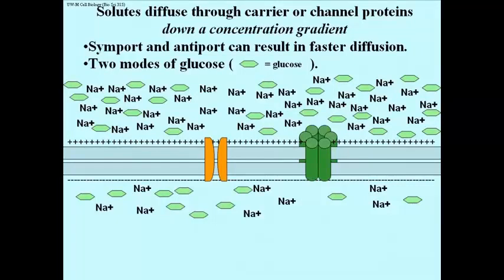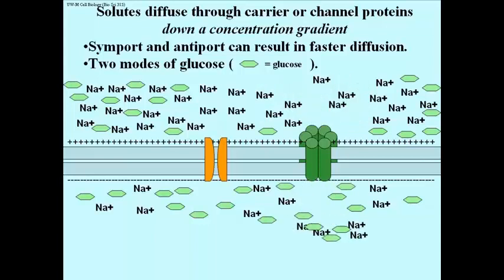Here is glucose transport enhanced by an electrochemical gradient. Notice again that in this cellular membrane, in this plasma membrane, the outside of the cell is positive and the inside is electronegative. So there is a membrane potential across this membrane.